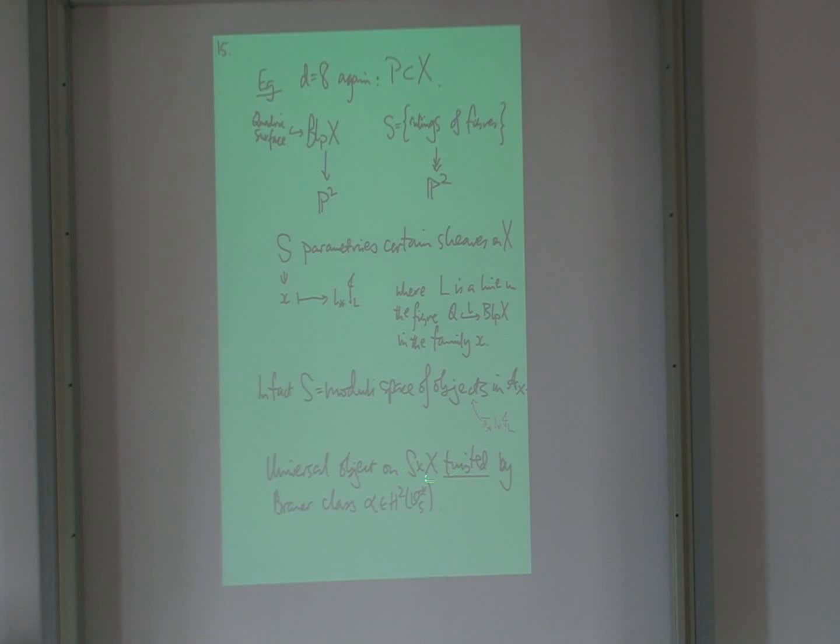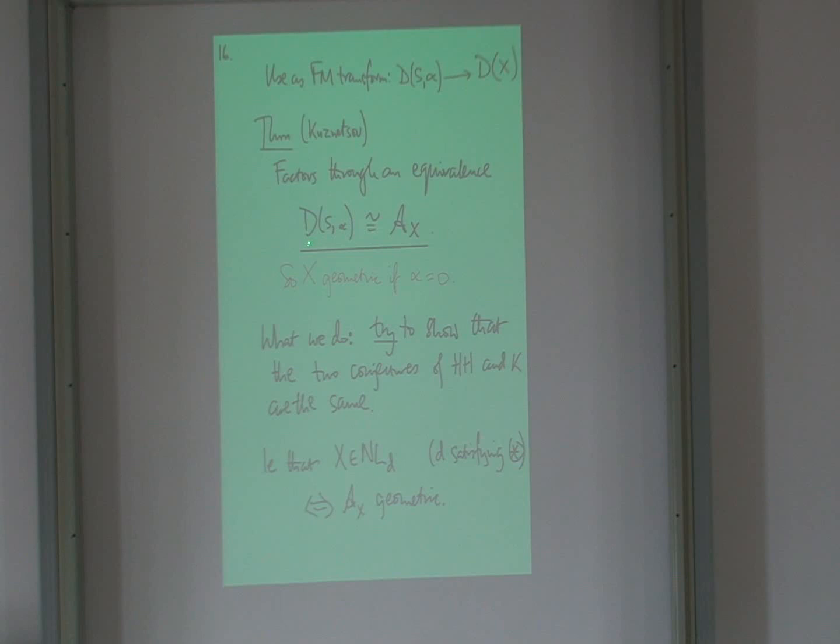And then the universal objects on S times X, there isn't a universal sheaf, because when you try to glue it all together to get a universal sheaf, you precisely get a cocycle. So it exists locally, but there's some cocycle in defining it globally, and that's the Brauer class I mentioned before. So you're going to look at the twisted sheaf, or twisted complex of sheaves on S times X. If you use that as a Fourier transform instead of a correspondence, then you find, because Nettov proves that this AX is precisely the derived category of coherent sheaves on S twisted by this Brauer pattern.